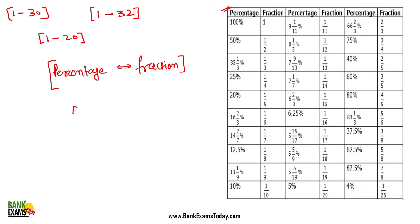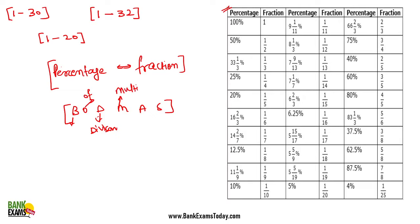Apart from these, one should be aware of the BODMAS rule. It gives us the sequential preference of mathematical operations to be performed when all operations appear simultaneously in a question. Brackets are solved first, then 'of' (which means multiplication but is resolved before regular multiplication and division), followed by division, then multiplication, then addition, and finally subtraction.